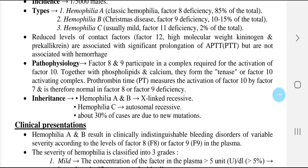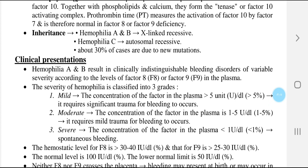Prothrombin time (PT) measures the activation of factor 10 by factor 7 and is therefore normal in factor 8 or factor 9 deficiency. The inheritance of hemophilia A and B is X-linked recessive; that of hemophilia C is autosomal recessive. About 30% of cases are due to a new mutation.